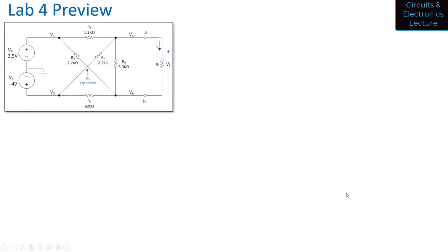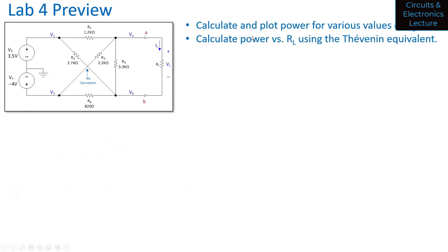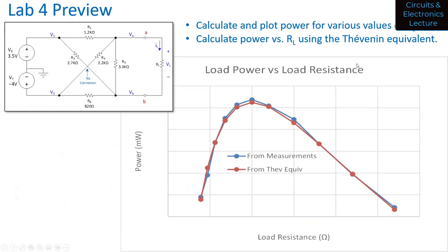Then you're going to do a maximum power transfer experiment with the circuit. You're going to calculate and plot power versus various values of R_L, and calculate power versus R_L using the Thevenin equivalent circuit. Your plot should show measurements and theory from the Thevenin equivalent circuit on the same plot, and they should match pretty closely. If you have any questions about that lab or pre-lab, stop by during office hours and we can chat about that.